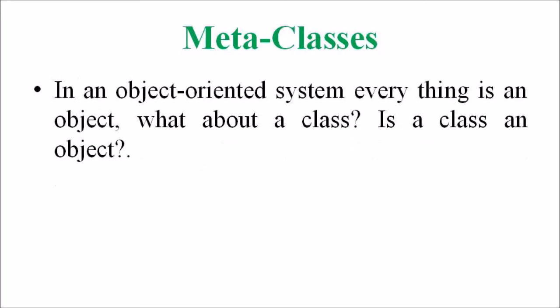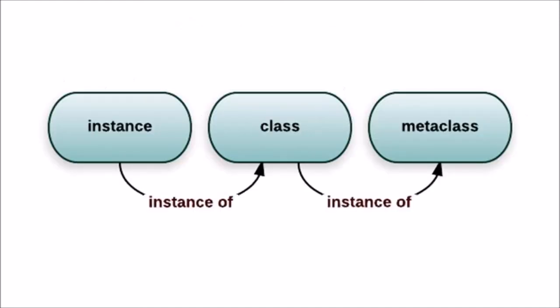Finally, we are discussing meta class. In an object-oriented system, everything is an object. Then what about the class — is a class an object? Yes, we can say that a class is an object. So if it is an object, it must belong to a class. Such a class belonging to a class is referred to as a meta class, or a class of classes, or simply the super class of all classes.